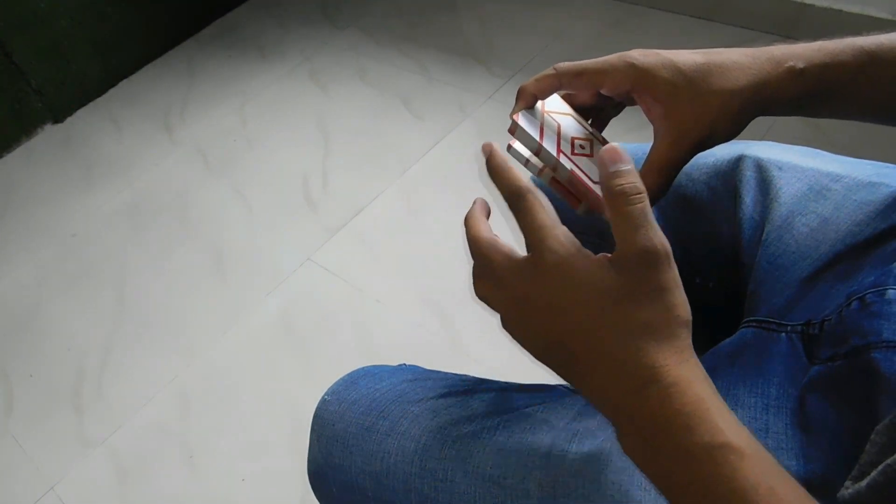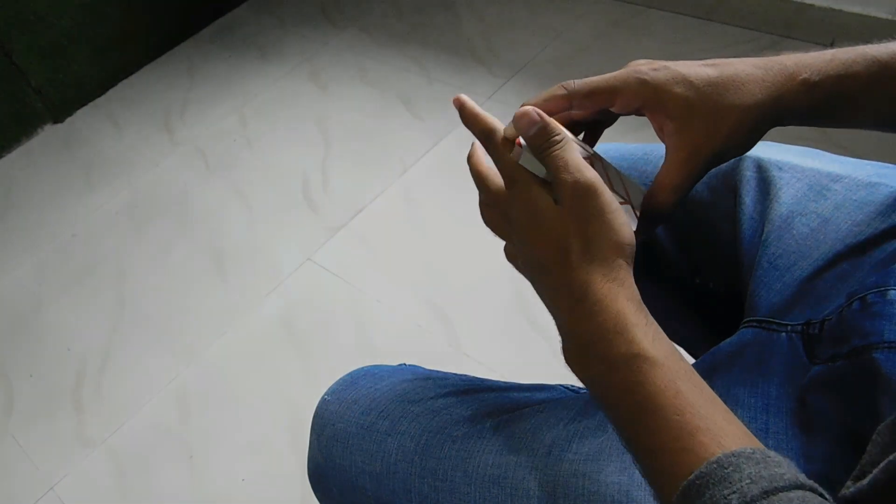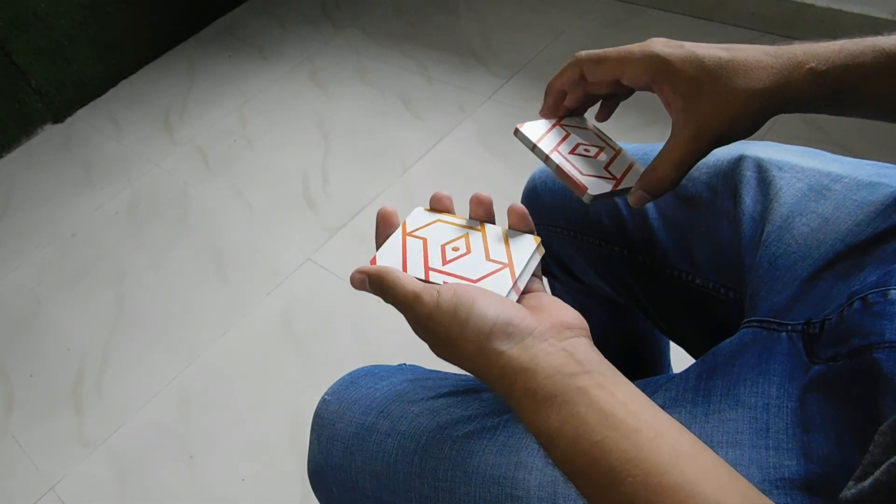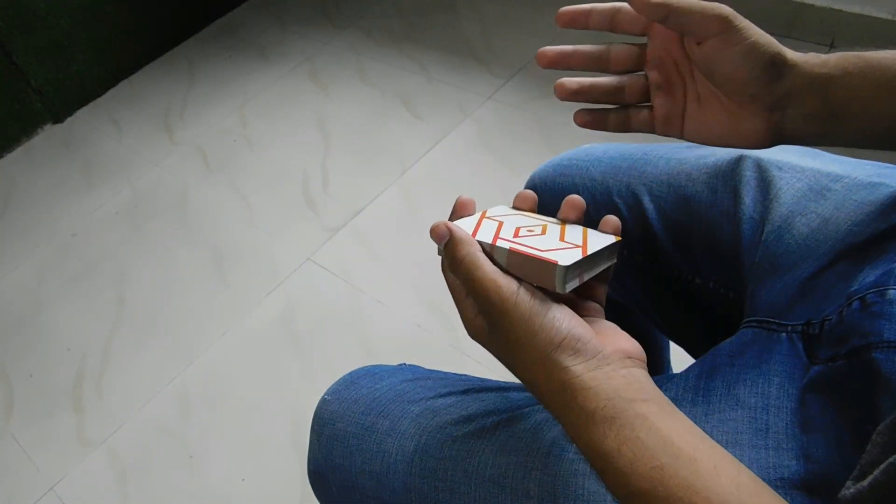Then you grab this upper packet with the thumb crotch of your left hand, just like this, and you place the rest of the packet above it. That's how the swing cut is done.